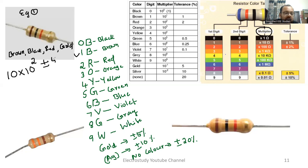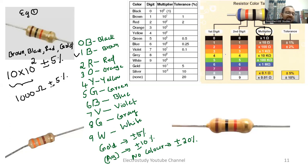Gold means plus or minus 5%. So now: 10 into 10 to the power 2 is nothing but 1000 ohm, plus or minus 5%. One thousand ohm is nothing but 1 kilo ohm. So the value of the given resistance is 1 kΩ.